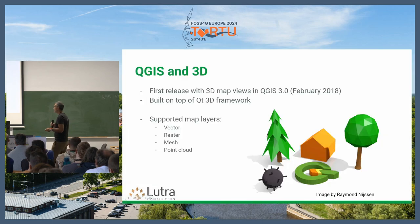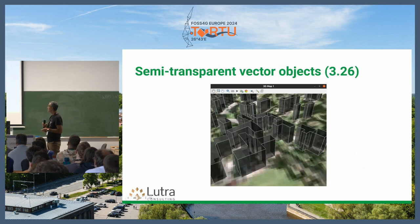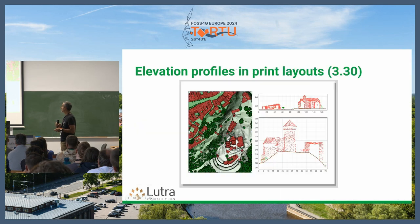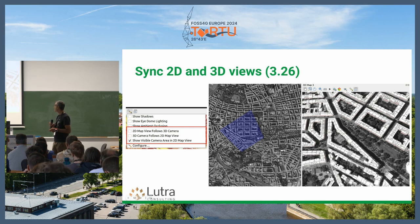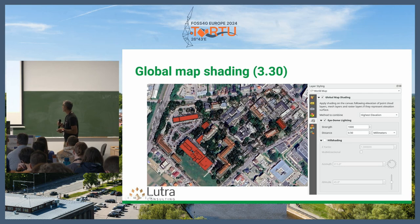Recent improvements in QGIS 3D: the 3D map canvas supports vector, raster, mesh, and point clouds. In recent versions, some features added include vector transparency like buildings, a profile tool which supports rasters and point clouds with export to print composer, and you can also see the extent of your 2D view in the 3D map — including the camera you are looking at — and global map shading so you can get a nice hillshade effect on your 2D map canvas.